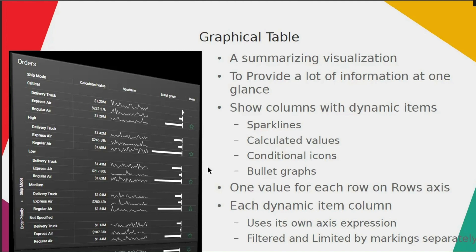You can show columns with dynamic items, sparklines, calculated values, conditional icons, or bullet graphs. These are also called miniature visualizations because they are not full-fledged visualizations, but are able to communicate key details in the form of small charts to convey the message. You can iterate these visualizations across the leaf nodes selected on the row axis. There will be one value for each row, and each dynamic item column has its own axis expression, filtered and limited by marking separately.